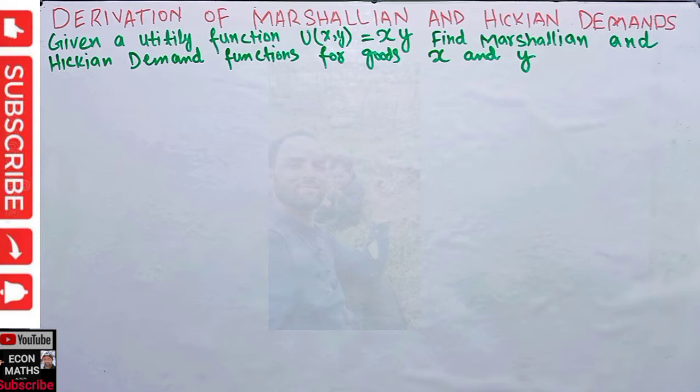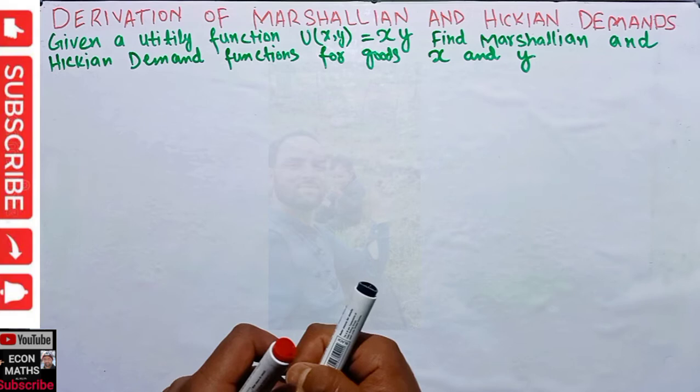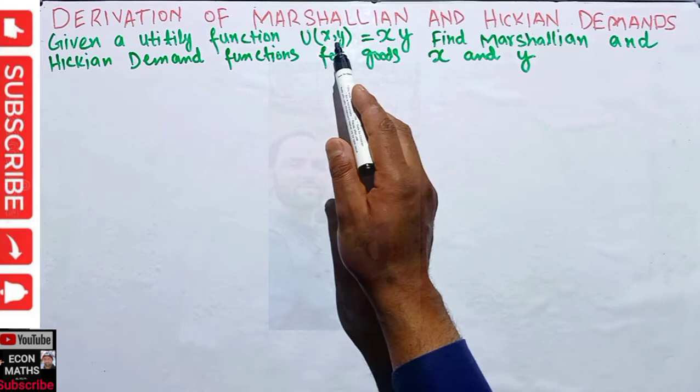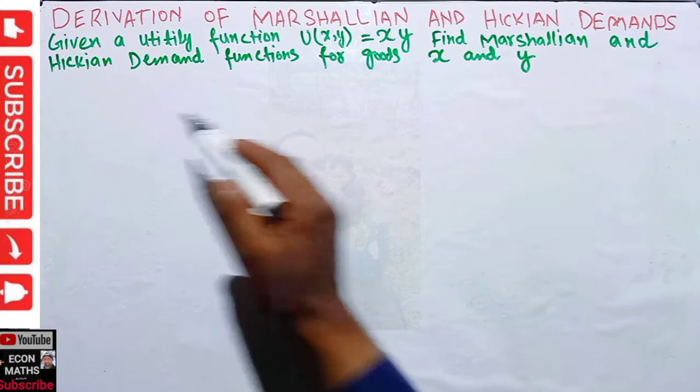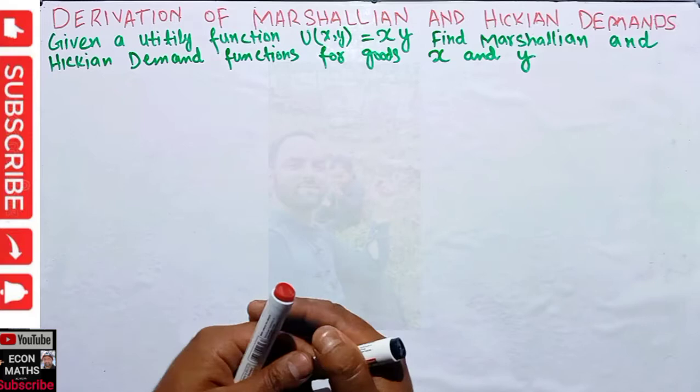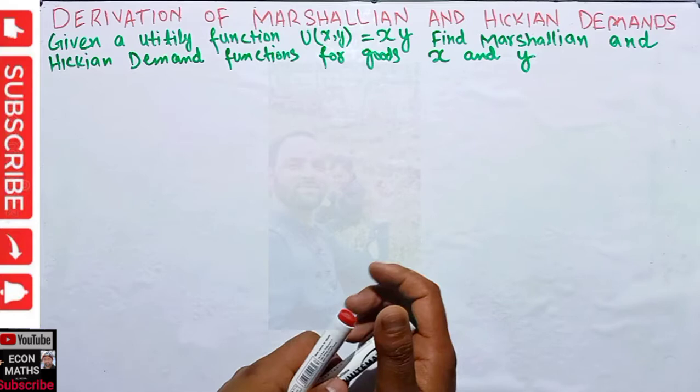Hi, this is Halal. In this video on the mathematical economics series, we will learn how to derive the Marshallian and Hicksian demand functions with an example. The question is: given a utility function U(x, y) = xy, where x and y are the two goods, find the Marshallian and Hicksian demand functions for goods x and y.